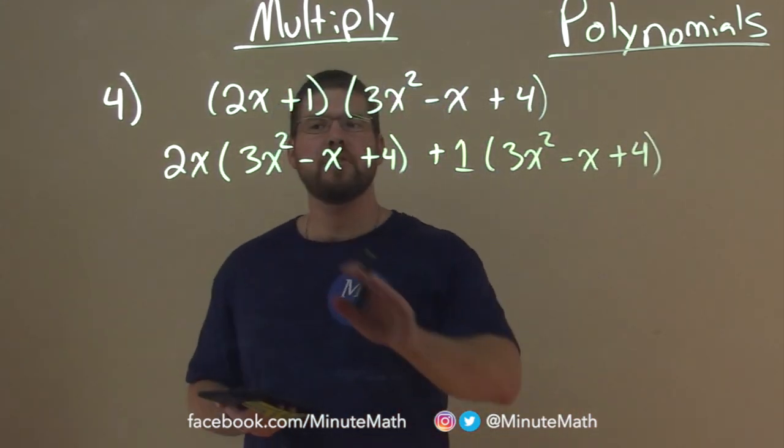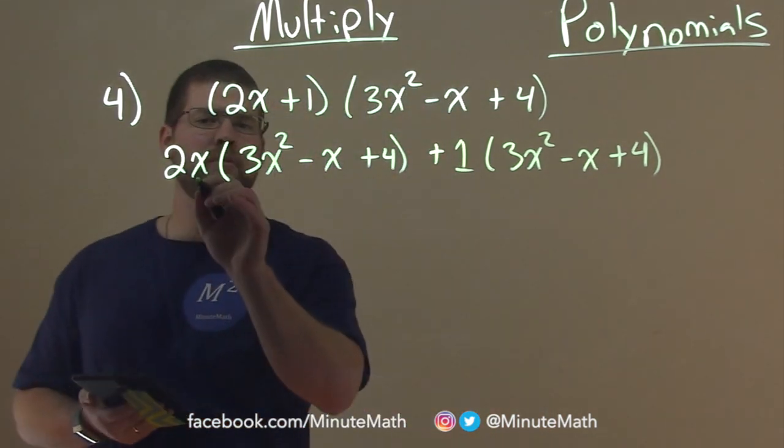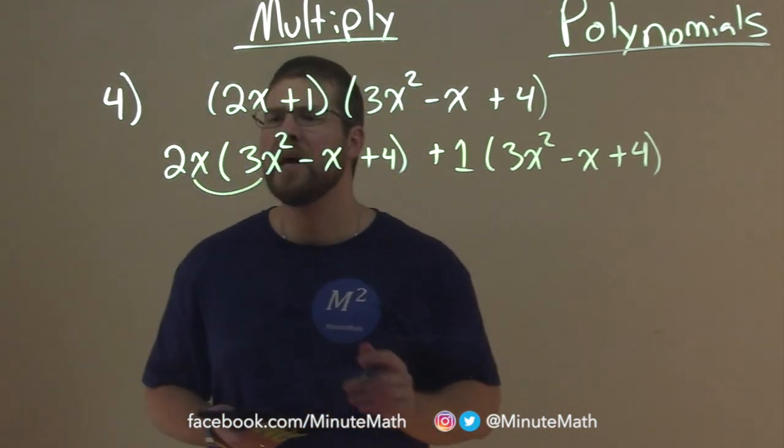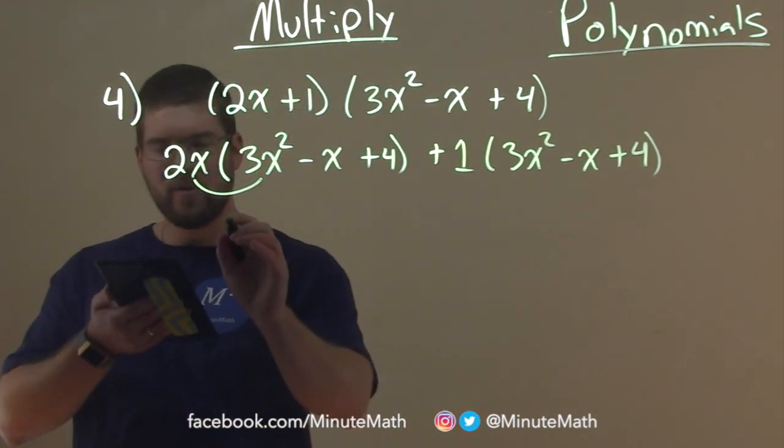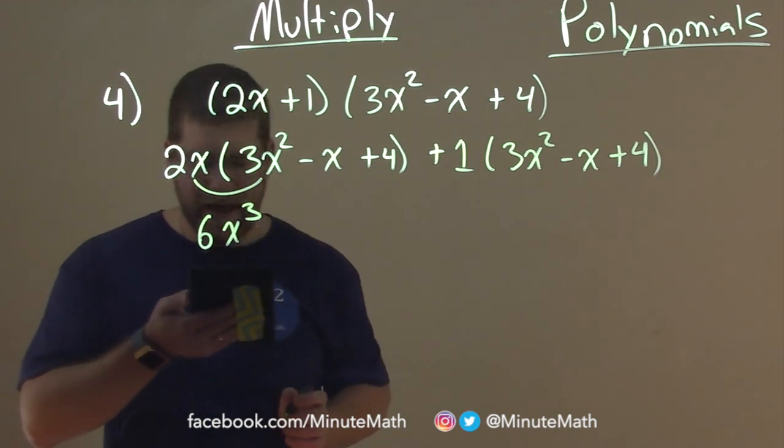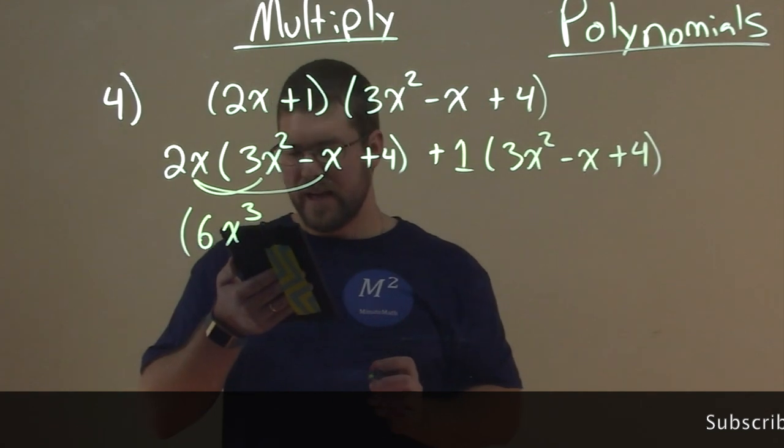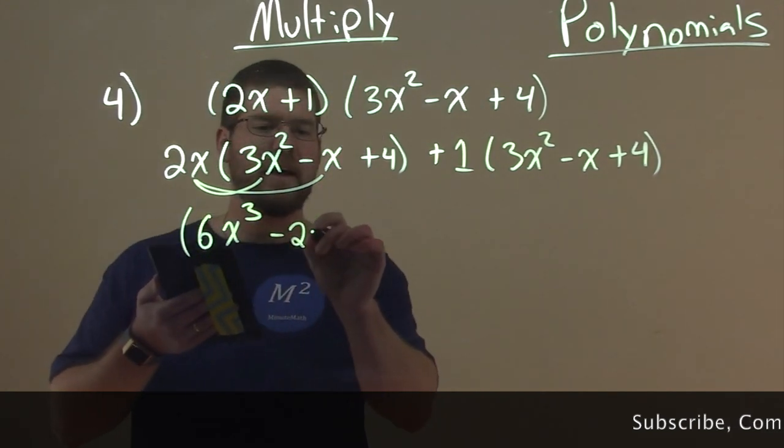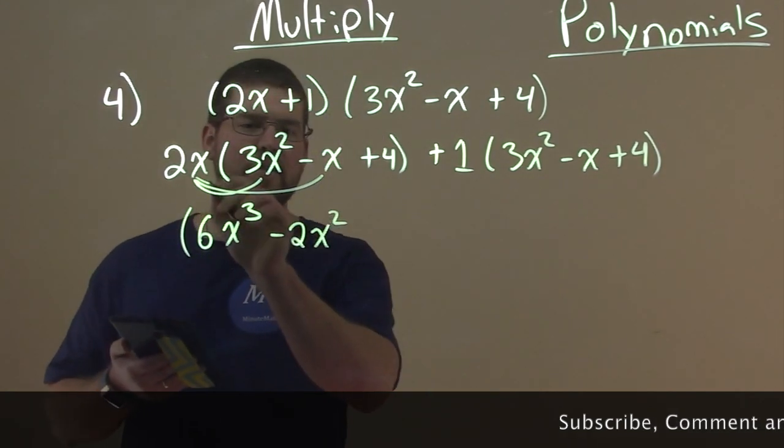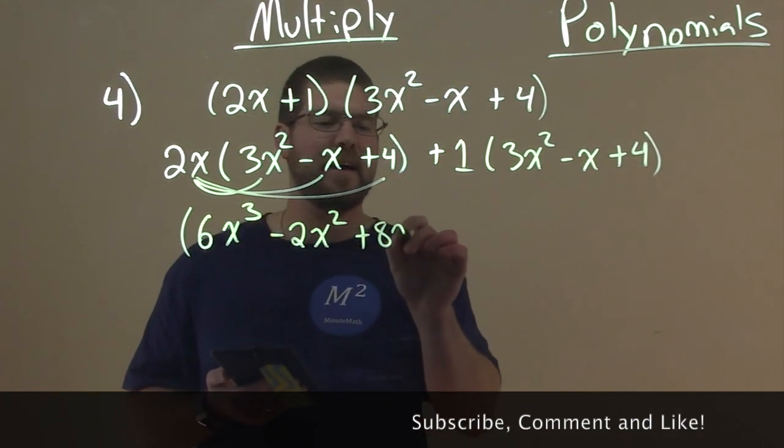And now we can distribute and we'll simplify. So let's multiply 2x by 3x squared, and 2x times 3x squared is our 6x to the third power. Remember, we add the exponents. Again, 2x times a minus x is a minus 2x squared. And lastly, 2x times a 4 is our 8x here.